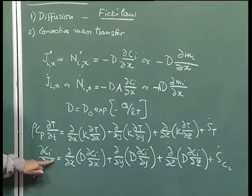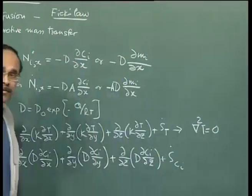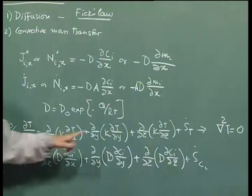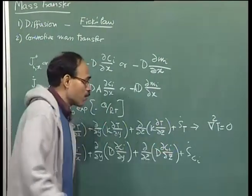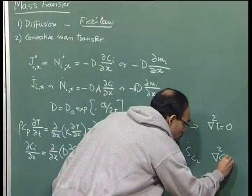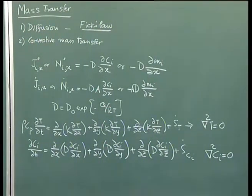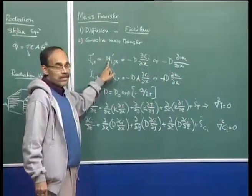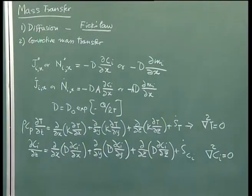For constant diffusion coefficient, steady state, and no mass source term, the equation reduces to the Laplace equation — ∇²Cᵢ = 0 — which is identical to the steady-state heat conduction equation ∇²T = 0. If you can solve this equation, you can find the fluxes by multiplying the concentration gradient by the diffusion coefficient and then by the relevant area through which mass diffusion is taking place.